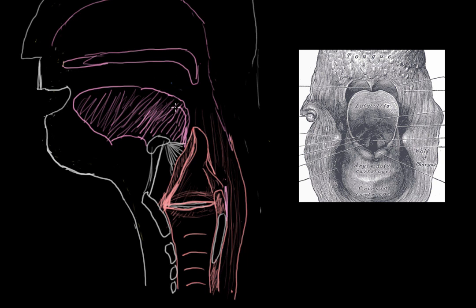Diagnosis of epiglottitis starts with a clinical impression. A patient will come in with difficulty breathing, perhaps difficulty swallowing. Patients will commonly be drooling because they can't swallow. And they'll have a very muffled voice, very hoarse and deep, because they don't want to vibrate their epiglottis since their epiglottis is swollen.